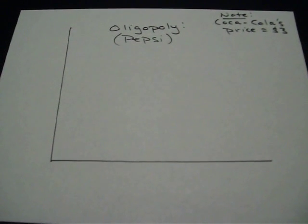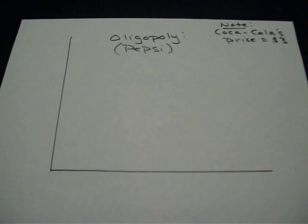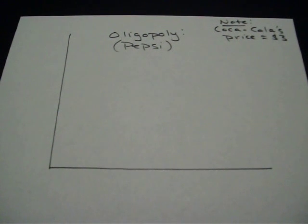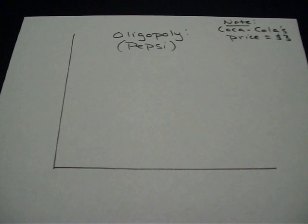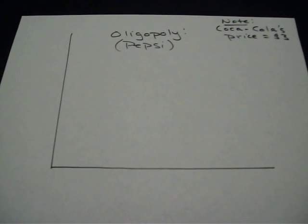So here we're looking at an oligopoly market structure. An oligopoly is where we just have a few firms, there's pretty significant barriers to entry. We also assume that there is perfect knowledge in this industry as well.